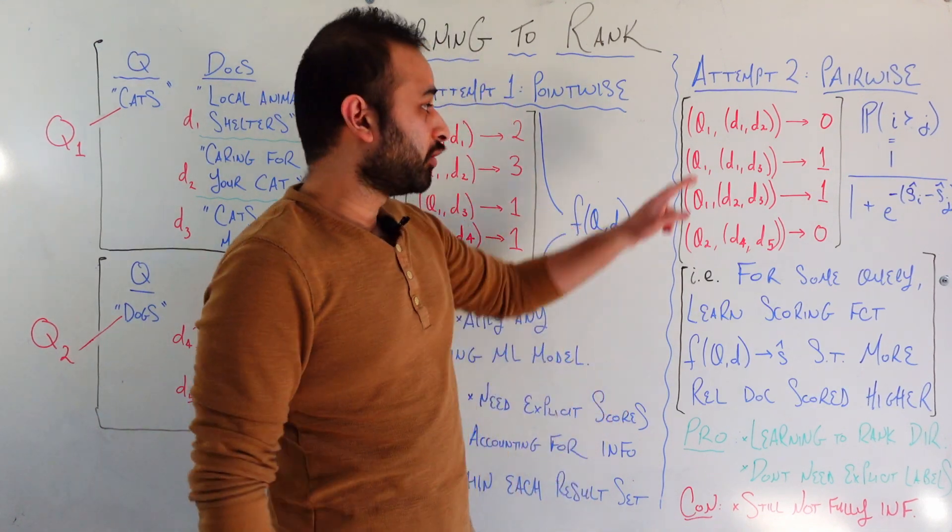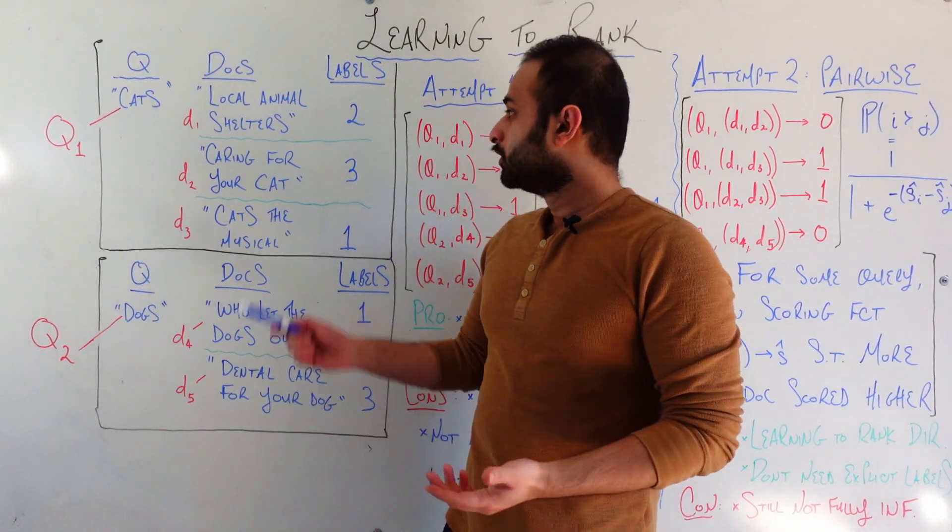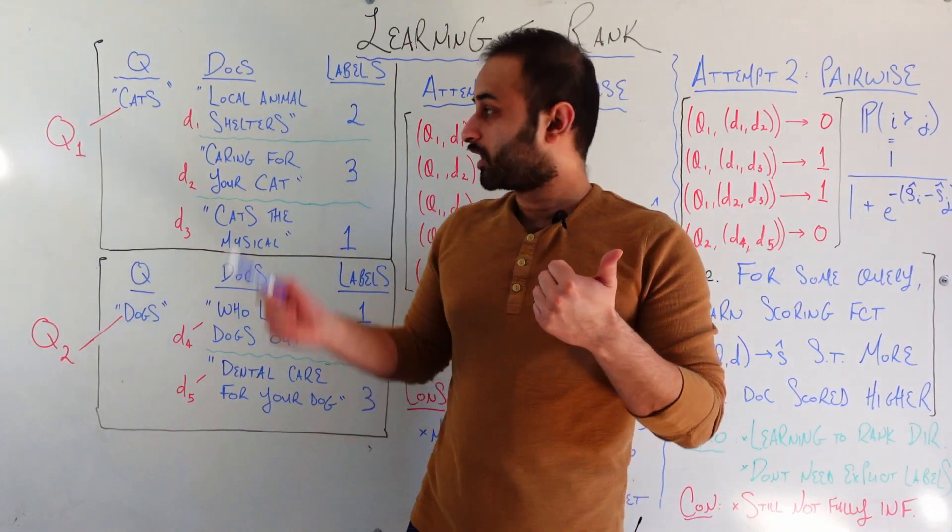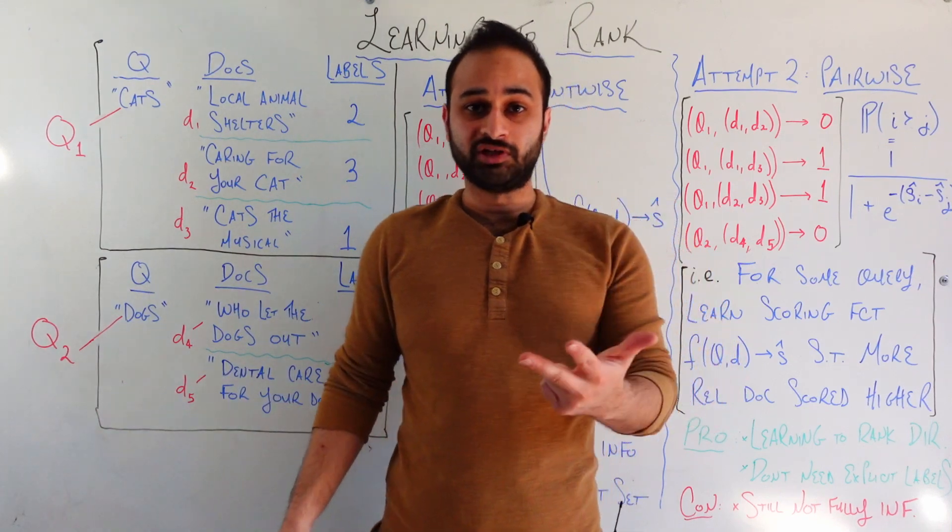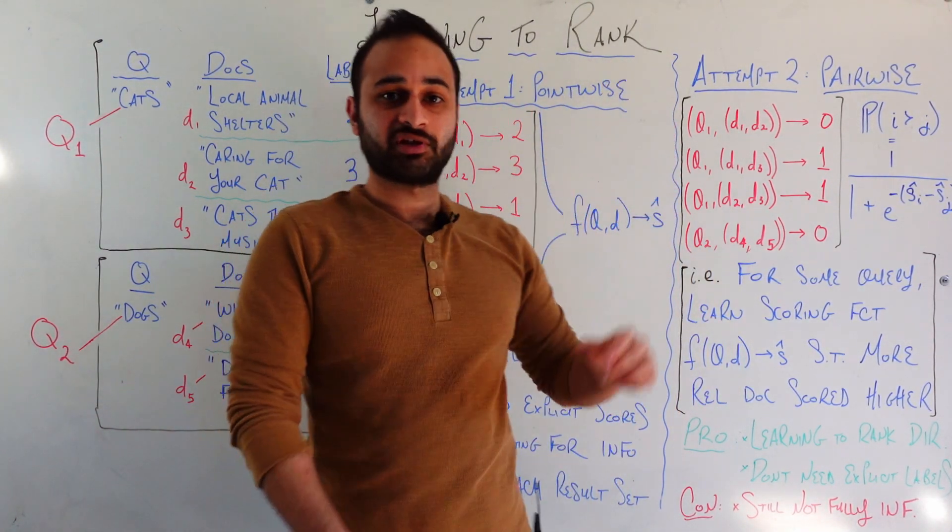So for example, if we're looking at query one, what are the total number of pairs of documents we could have? We could have D1, D2. We could have D1, D3. We could have D2, D3. And those are the exact three things you're seeing as the first three examples in this training data.